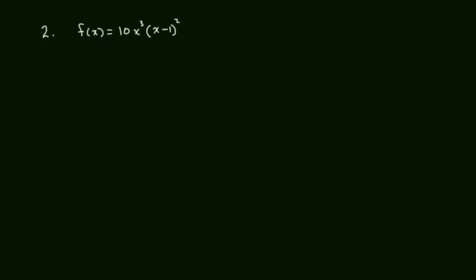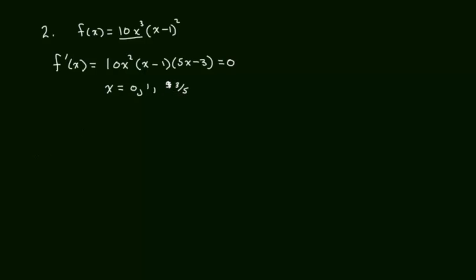Example 2: F of x is 10x³ times the quantity (x minus 1)², and part A says find where it has relative extrema and justify with the first derivative test. We find the derivative using the product rule. The simplified, factored form is 10x² times (x minus 1) times (5x minus 3). We want horizontal tangents, so we set it equal to 0, giving three critical x values: 0, 1, and 3/5. I'm going to construct my no-point number line — no points because it gives me no points for justification.